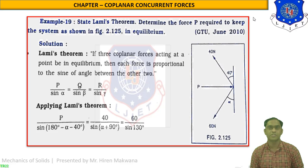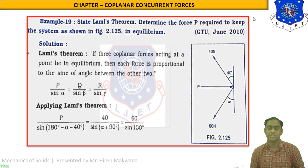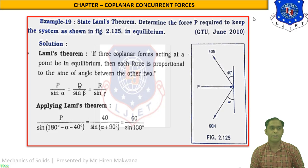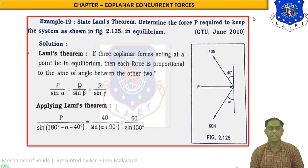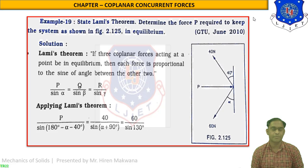This is example number 19 on your screen. Today we will discuss two more numericals which are very important and are somewhat outside the main topic. The problem states: 'State Lame's theorem and determine the force P required to keep the system shown in the figure in equilibrium.' Lame's theorem states: if three coplanar forces acting at a point are in equilibrium, then each force is proportional to the sine of the angle between the other two — that is, P/sin α = Q/sin β = R/sin γ.